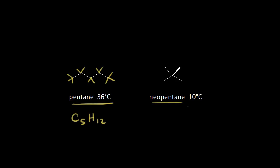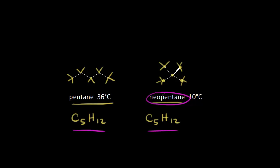What about neopentane on the right? It also has five carbons and twelve hydrogens, so C5H12. These two compounds have the same molecular formula. The difference is that neopentane has some branching, whereas pentane doesn't — it's a straight chain. Pentane's boiling point is 36 degrees C, while neopentane's drops down to 10 degrees C. Let's try to figure out why.